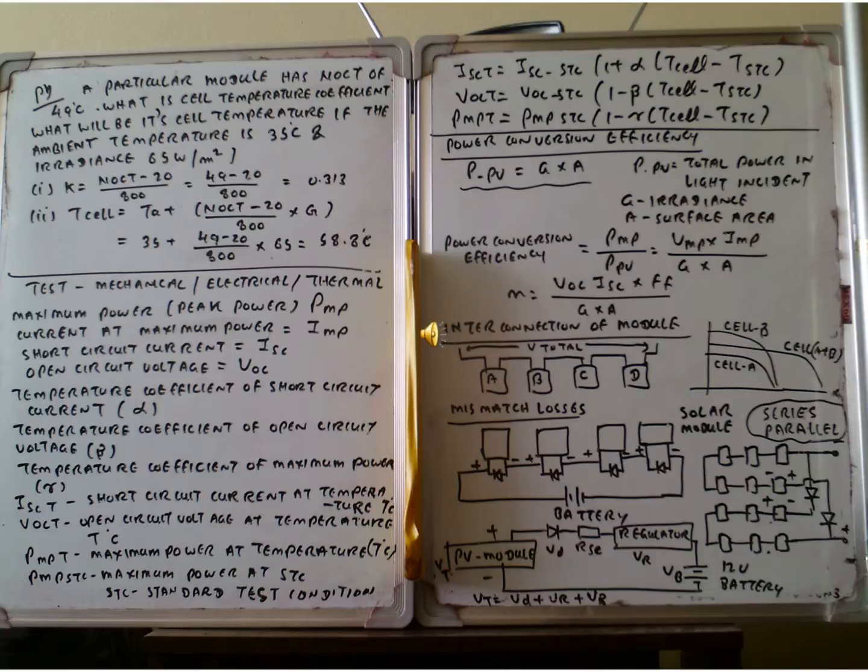So in this problem, we have to get the cell temperature. This is the 49 degree centigrade. We have to calculate the cell temperature coefficient K. The ambient temperature is 35 degree centigrade, it is 850 Watt by meter squared. So firstly, we calculate the K. K equal to NOCT minus 20 divided by 800. So, 49 minus 20 divided by 800, you got 0.0313.